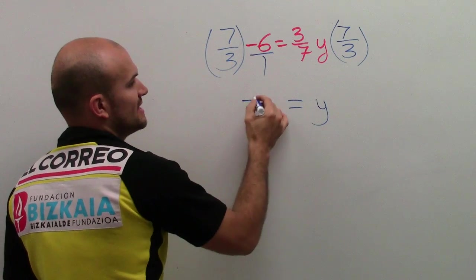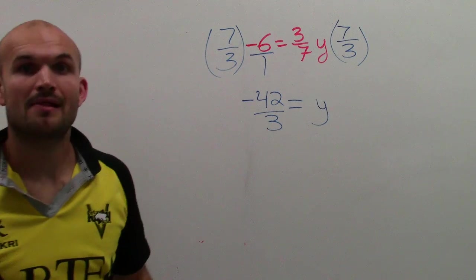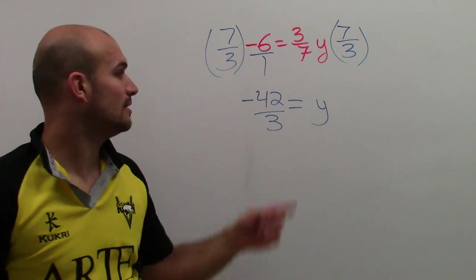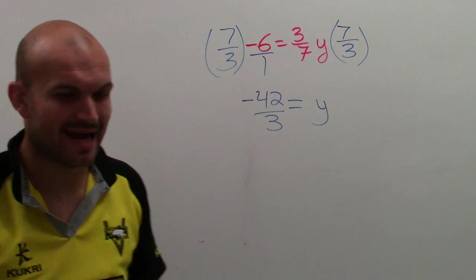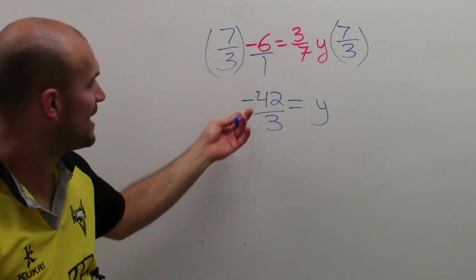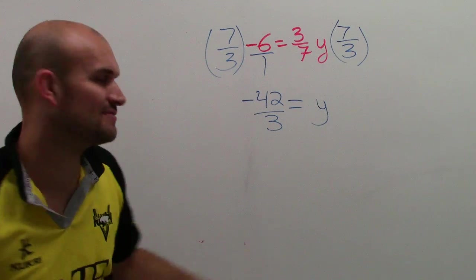7 times negative 6 is a negative 42 divided by 3. Then I just need to determine, what is negative 42 divided by 3?